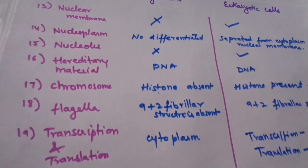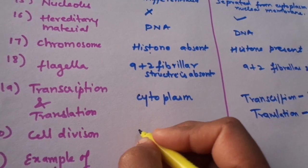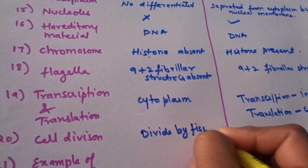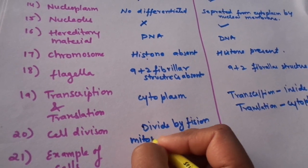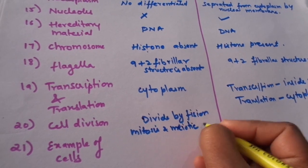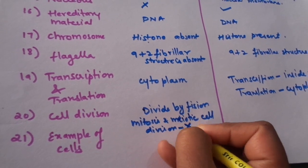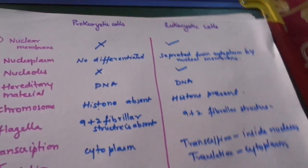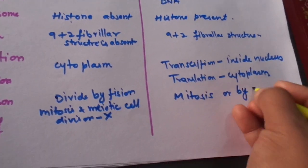In the case of prokaryotic cells, cell division is simply fission — the cells divide by binary fission — and mitosis and meiosis are absent. However, in the case of eukaryotic cells, the cells divide by mitosis or by meiosis.